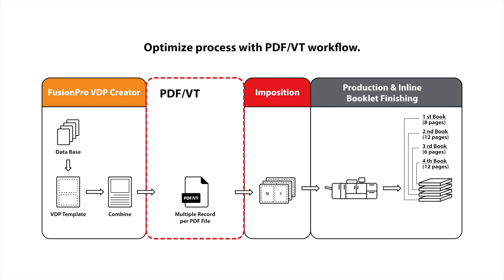It's a good thing then that we found a shortcut to this process. Instead of composing the file as a PDF, we'll compose it as PDFVT. PDFVT is a PDF file format specifically for variable data printing — the V and T actually stand for variable and transactional. Transactional printing, as we've shown before, is a common type of variable data printing job. With this process, we can output all entries as a single file, and the imposition software will be able to read the number of pages per record and do the imposition and finishing accordingly.